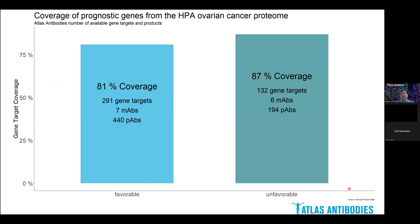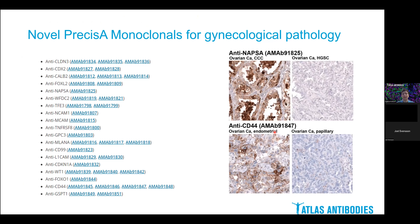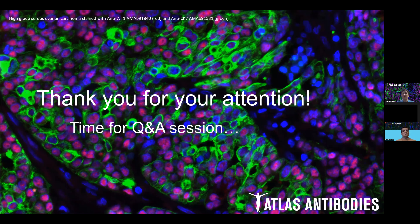Atlas Antibodies offers a large catalogue of highly validated both polyclonal and monoclonal antibodies, together covering more than 80% of genes that have significantly favorable or unfavorable prognostic values, which we truly hope can facilitate this much-needed research in diagnostics in the ovarian pathology field. We are constantly working on development of new monoclonal antibodies for both basic research and pathology. Here you can see examples of some of our recently released monoclonal antibodies which are relevant for gynecological pathology and ovarian cancer in particular. You can find more information about these products on our webpage and also links to the Human Protein Atlas. Thank you all for your attention — we'll be happy to take any questions.